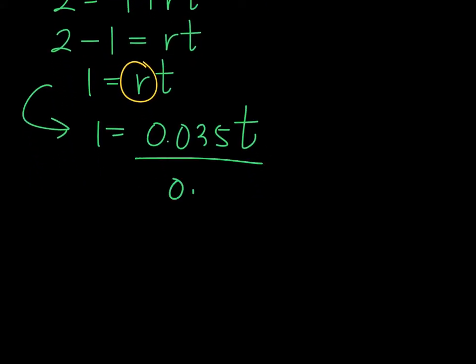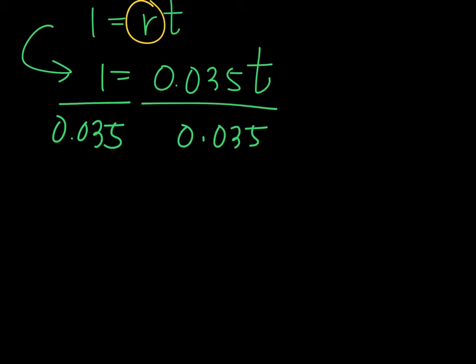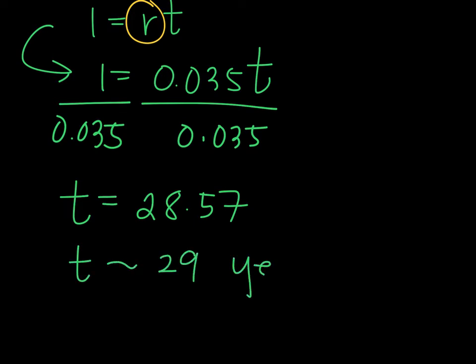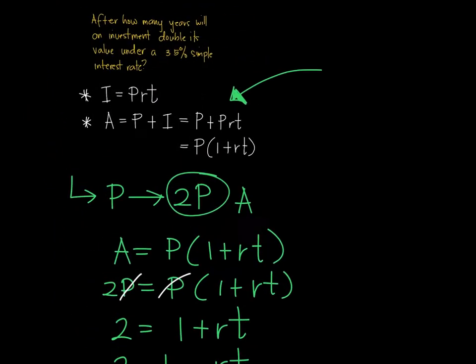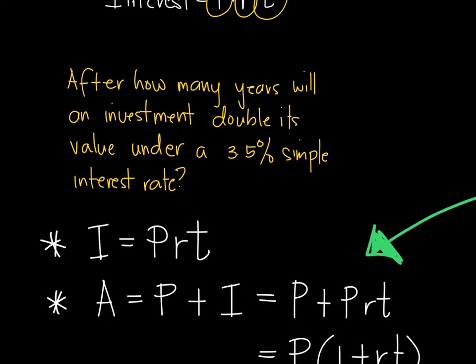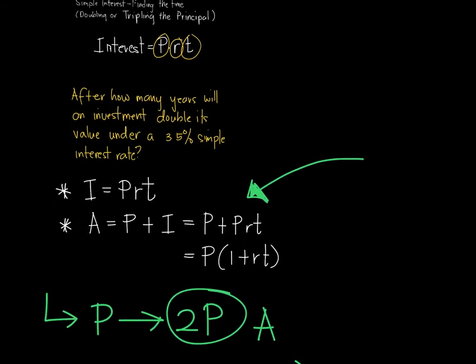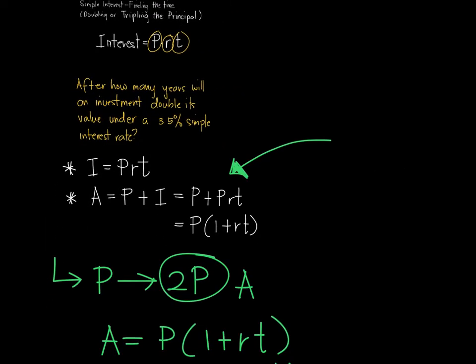Dividing both sides by 0.035, then we will get the exact time. This T is equal to 1 divided by 0.035 is 28.57. So it will take about approximately 29 years. So that's how long it will take a certain value, any random value under a 3.5% simple interest rate to double its value.